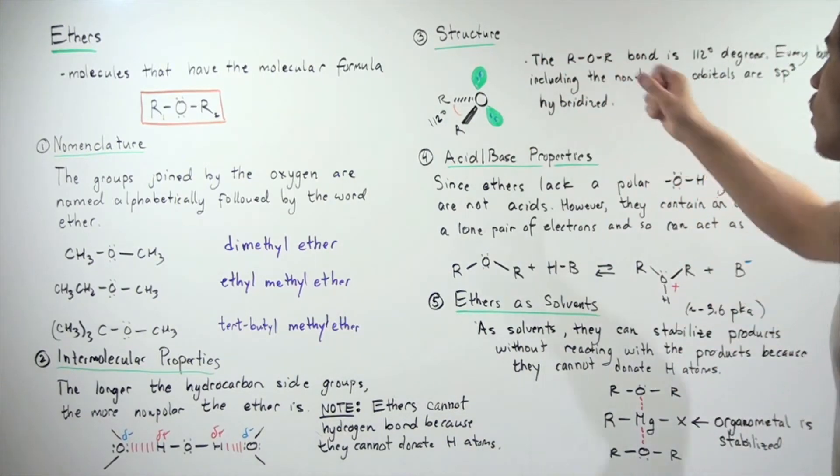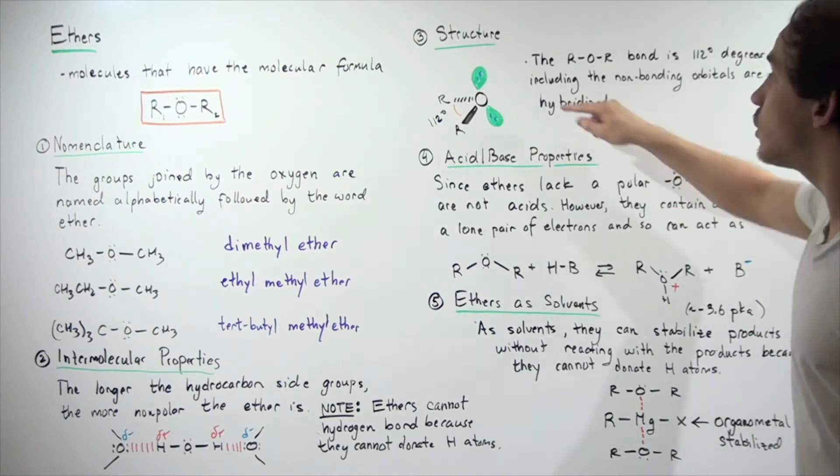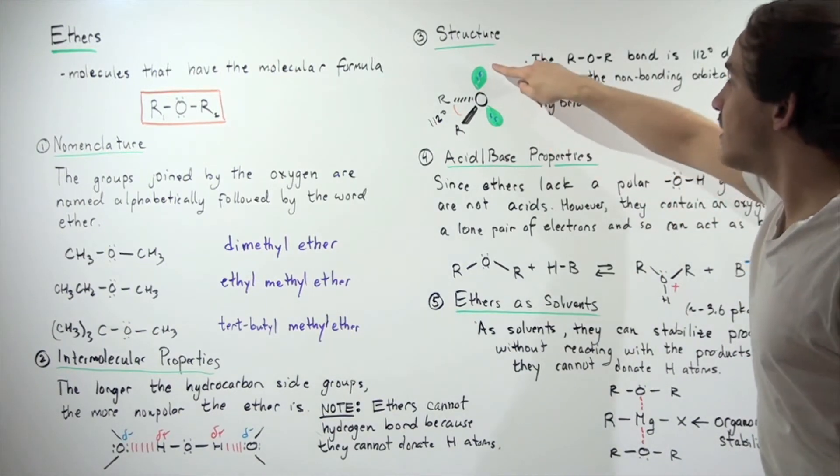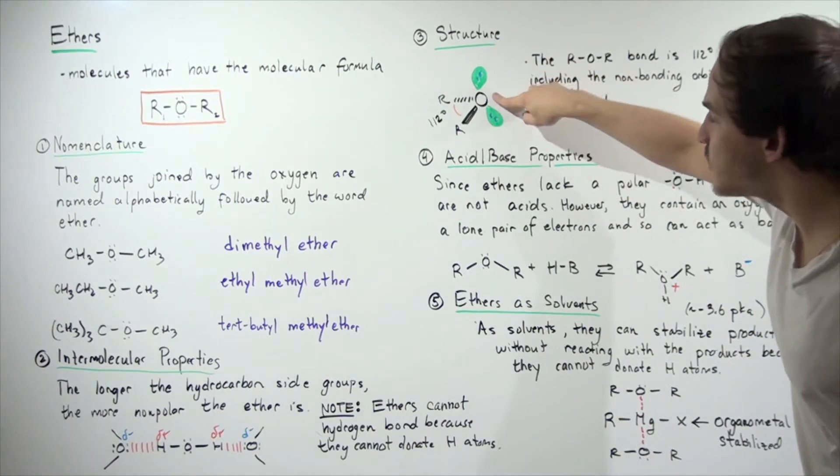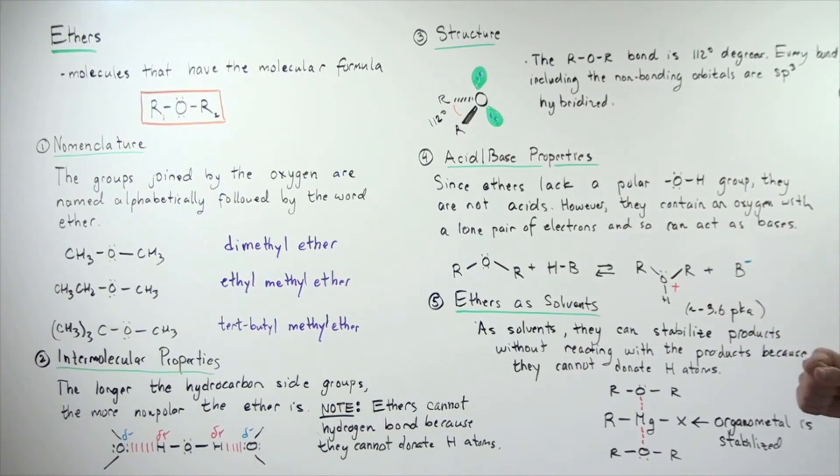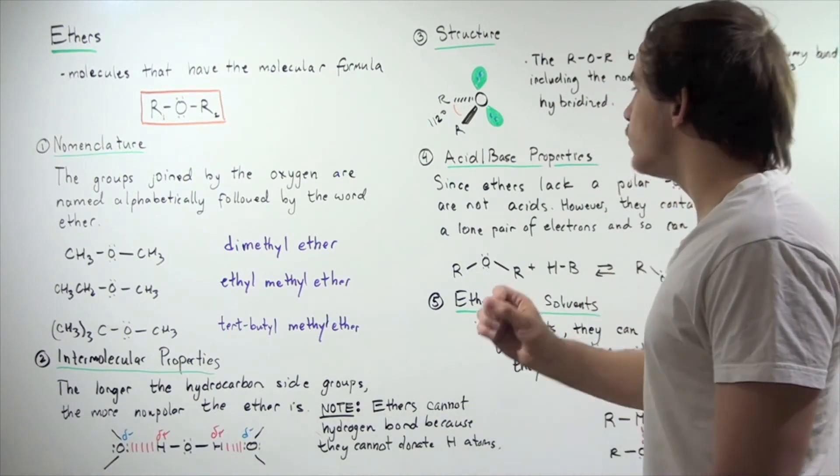Once again, the R-O-R bond angle is 112 degrees. Every bond, including these two non-bonding atomic orbitals, is sp3 hybridized. Our oxygen is sp3 hybridized, just like it is in alcohol and in water.